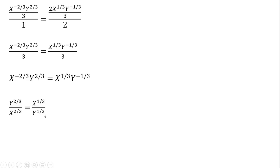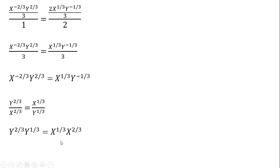From here we simply cross-multiply. Y to the 1/3 multiplied by Y to the 2/3, and X to the 2/3 times X to the 1/3. Adding up the exponents on the Y and X terms gives us the nice result: Y equals X.